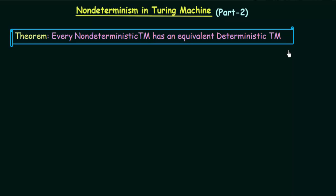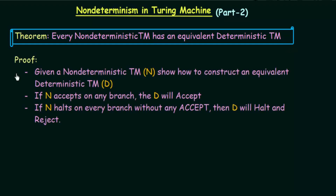In order to prove this theorem, we have to show that for every non-deterministic Turing machine there is an equivalent deterministic Turing machine. Given a non-deterministic Turing machine N, we have to show how to construct an equivalent deterministic Turing machine D. We have to see that if N accepts on any branch, then D will accept — meaning if the non-deterministic Turing machine reaches an accept state on any branch, the deterministic Turing machine will also accept.